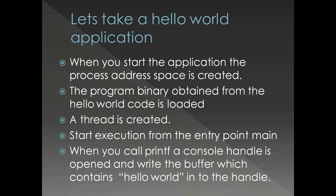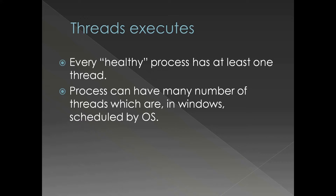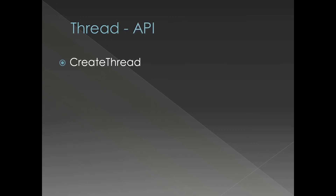As mentioned, threads execute CPU instructions — nothing else executes CPU instructions. The operating system uses the concept of threads to time-slice the CPU between different programs in a multitasking operating system like Windows. Every healthy process has at least one thread. The default thread of a process is created at the time of process startup, and we can create additional threads from the main thread using the CreateThread API.